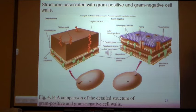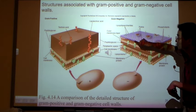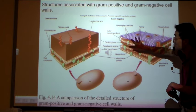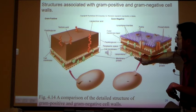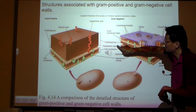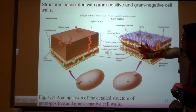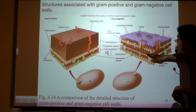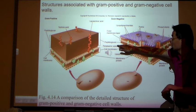Now in gram-negative bacteria, the cell wall is actually much thinner, but there are actually two layers of cell membrane. So in gram-negative bacteria there are two layers of cell membrane with a thinner layer of cell wall sandwiched in between — an outer membrane and an inner membrane. That's why there is a periplasmic space: the term periplasmic space means the space between the two layers of cell membrane. The peptidoglycan cell wall sits inside the periplasmic space.